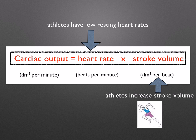During exercise, the cardiac output must increase to carry oxygenated blood at a higher rate to meet the oxygen demand in the muscles. Oxygen is required for respiration, which releases energy in the form of ATP. Athletes have got low resting heart rates and increased stroke volume.